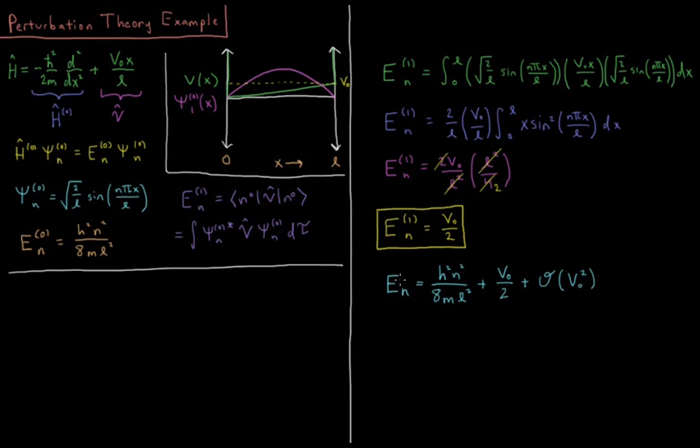So this says that our particle-in-a-box energies at first-order perturbation theory is h² n² over 8mL², the reference energy, plus the first-order correction to the energy, V0 over 2, plus then we would have second-order, third-order, fourth-order corrections beyond that.